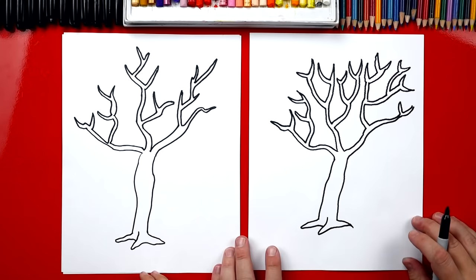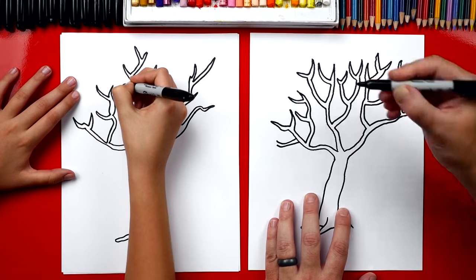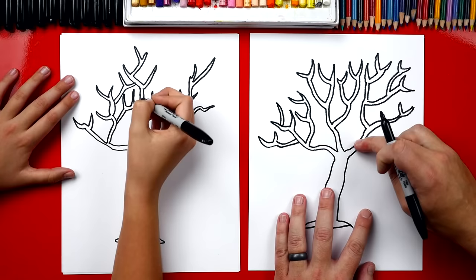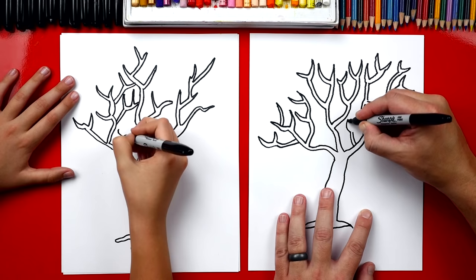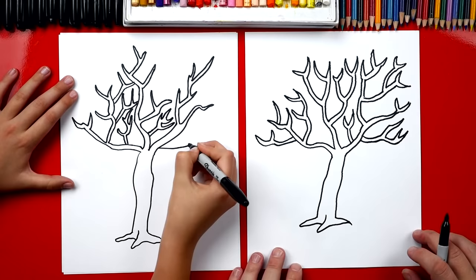Now if you want, you can actually add a few more branches too. Let's do that. Right here, I'm just gonna add a branch that comes out. Now the cool thing about this tree is you can come back in and add more branches where you feel like there needs to be more. So see how there's a really big space right here? Yeah. So I'm gonna add one that comes out like this. And then that one can split. Like that. I'm gonna add a branch coming down further. Good job, dude. I really like this extra one you added over here.